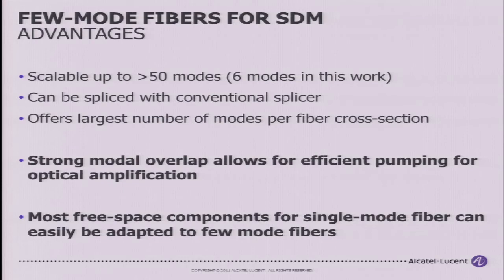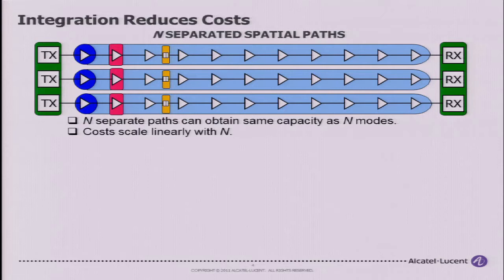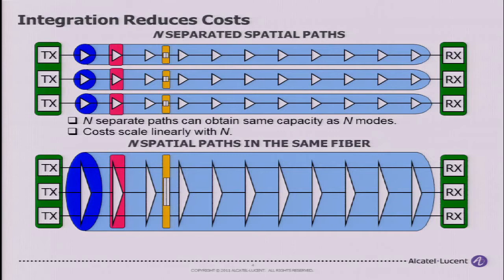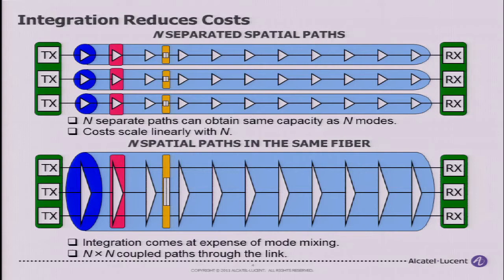So why go to all this trouble for space division multiplexing when you could just have n parallel links? You can increase capacity with n spatial paths, but the cost will scale linearly — every path you add requires the same number of amplifiers, routing elements, and isolators. If you put all the paths in one fiber, you can start sharing components: three times fewer amplifiers, three times fewer routing elements for the same capacity. However, this integration comes at the expense of mode mixing, which is why we need MIMO processing.